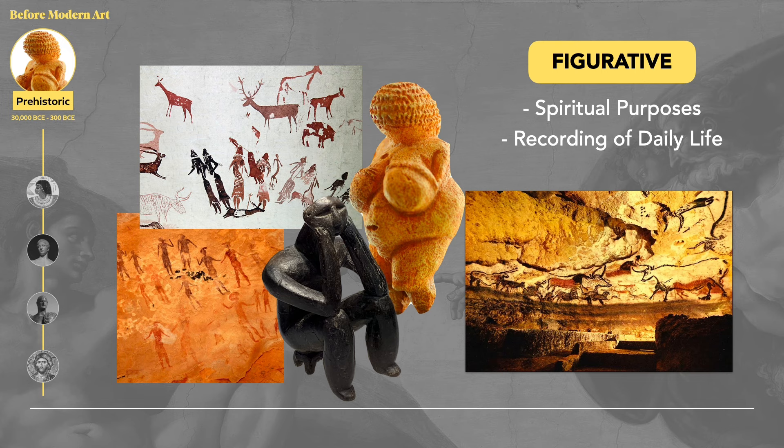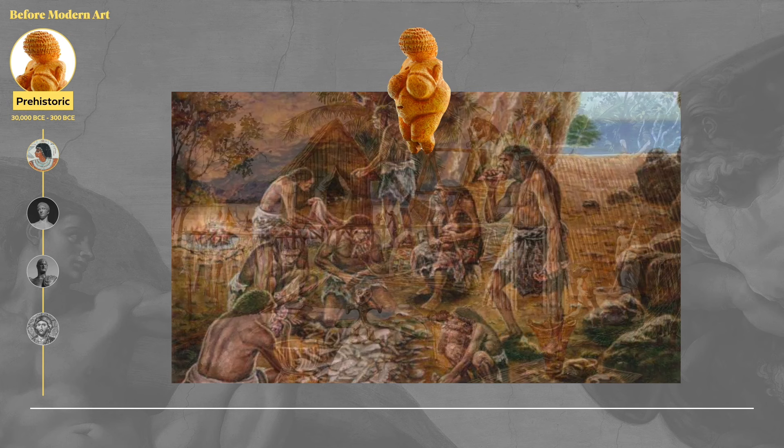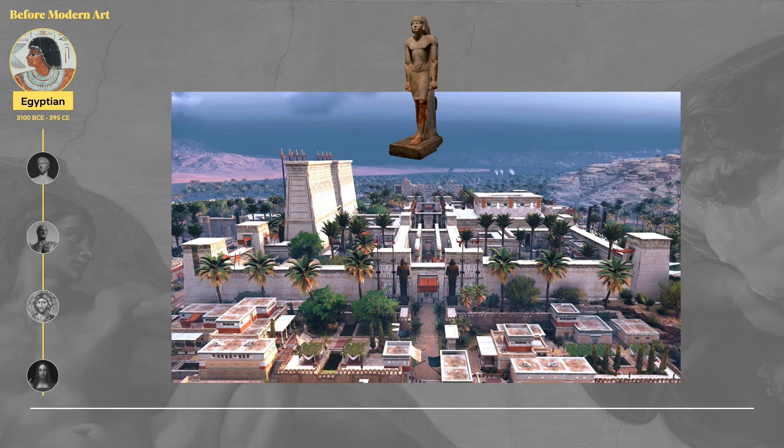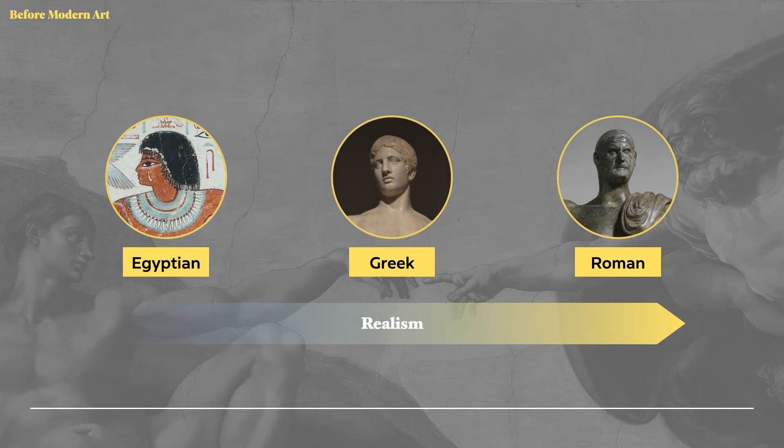The artworks you see here do not have to look realistic or perfect. As long as the user understands what the visual or object is for, that's good enough for them. The desire to make figurative art continues throughout this segment of art history. But as human civilization becomes more complex, there is a stronger desire for realism, as can be seen in the next three major art styles: Egyptian, Greek, and Roman art. Let's compare how each style portrays a standing figure.